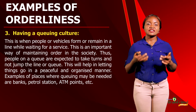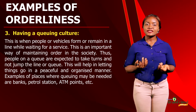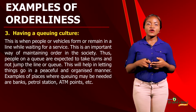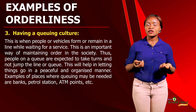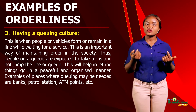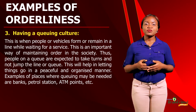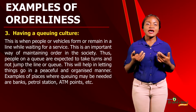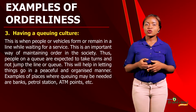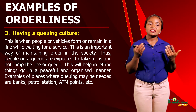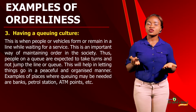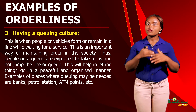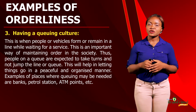Having a queuing culture is another example of orderliness. This entails people or vehicles forming or remaining in a line while they wait to receive a service. Examples of places where people may need to queue are at the bank, at ATM points, at petrol stations, and so on. Everyone is expected to stay in a queue and not jump the queue whenever a queue is formed, irrespective of the position or status of that person.